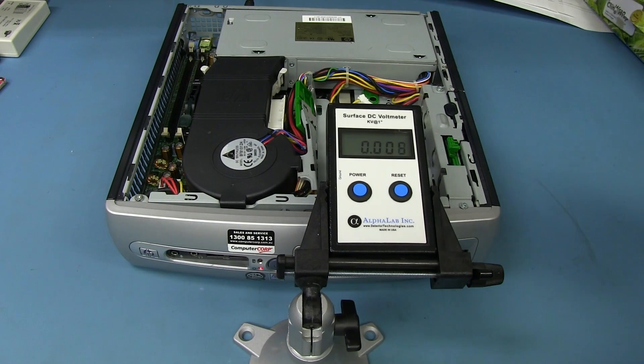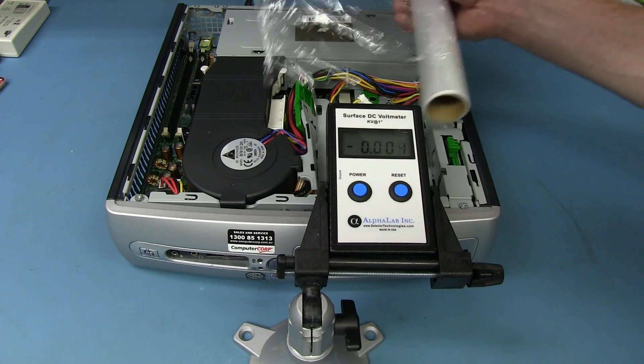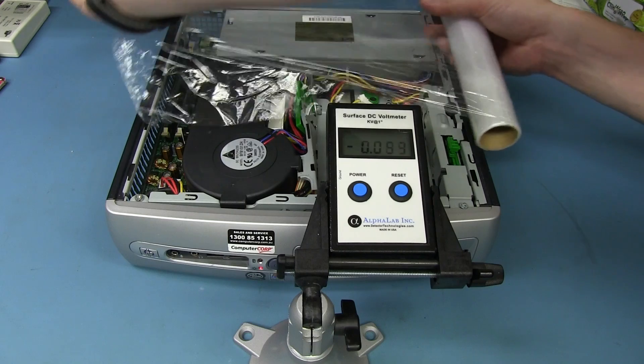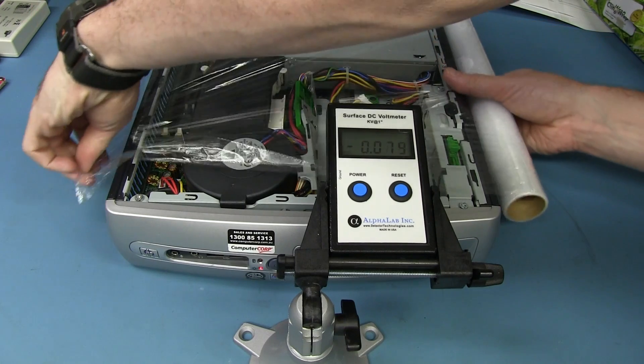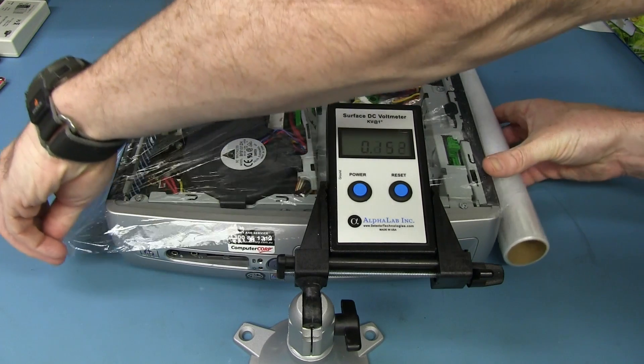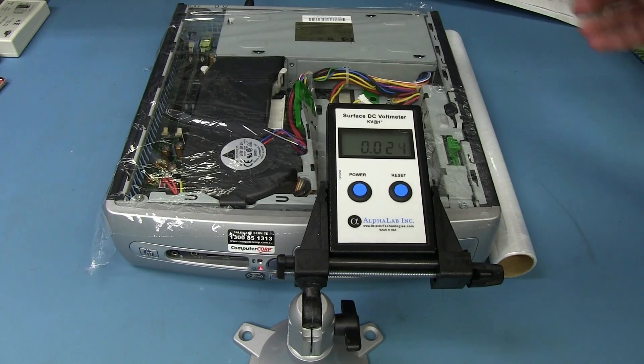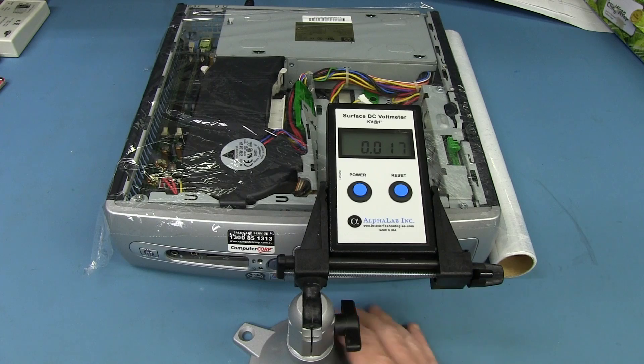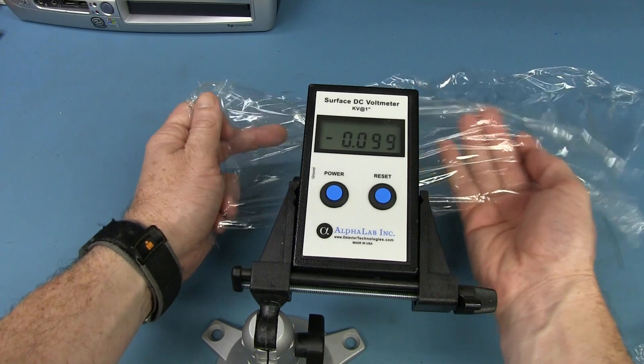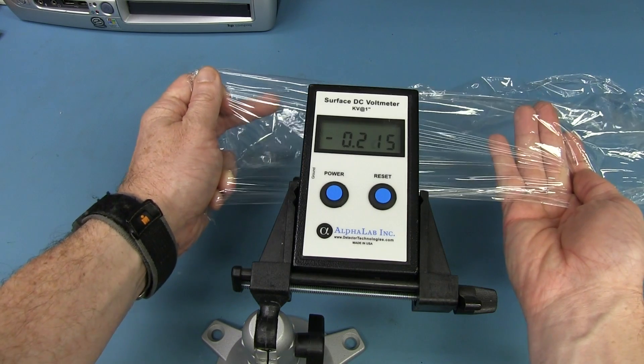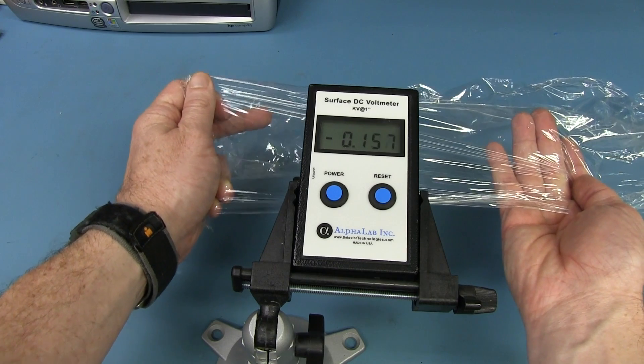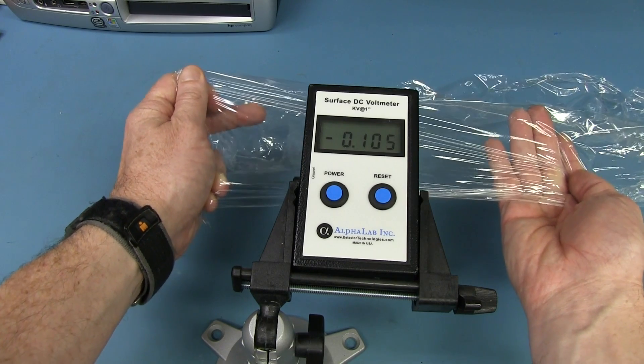And if I do that again by rolling out the cling wrap from its already rolled out state, there we go, not a huge deal. That's not a big deal, it's practically going down to zero there. So there you go, you do certainly need to be careful with cling wrap because it can build up a charge and that is totally expected.